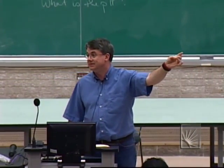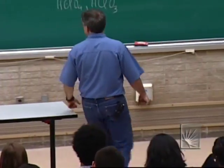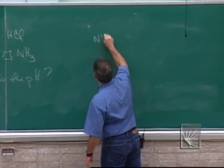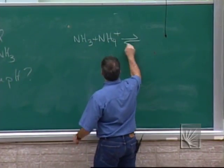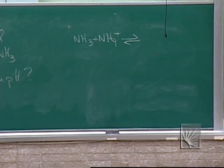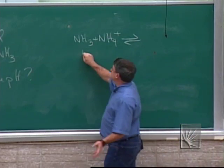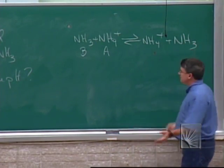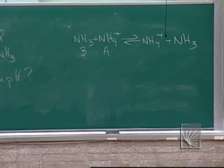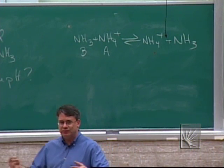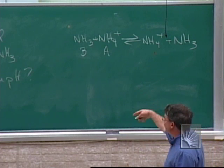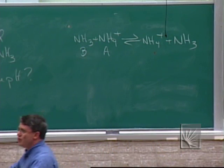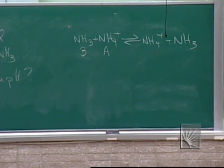Acids react with bases — unless it's a conjugate acid-base pair. Conjugate acid-base pairs don't react. But in general, acids and bases react together, so ammonia is going to react with HCl. Anytime you know all of the reactants, you have a limiting reactant problem. So this one should be screaming at you: limiting reactant problem. I need to know the limiting reactant.